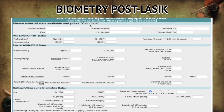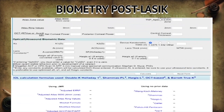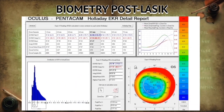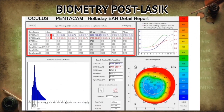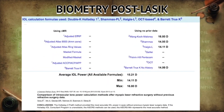After filling the patient details, the calculator allows us to fill in the preoperative records. In place of the Atlas ring topographer, one can choose values from the Holladay EKR map. The Holladay EKR map gives us K readings in different zones starting from 1 to 7 mm. The EKR 65 mean can also be used.